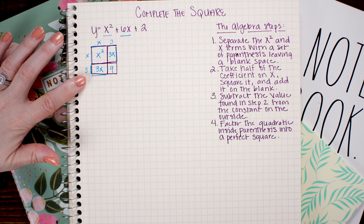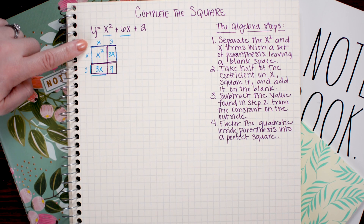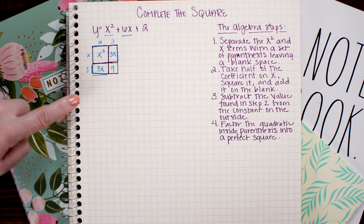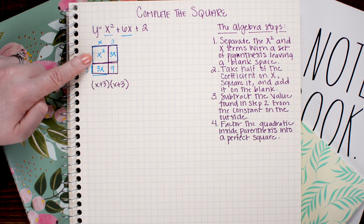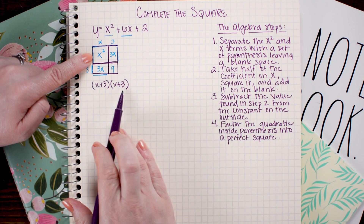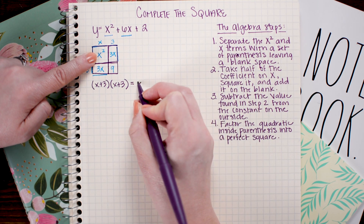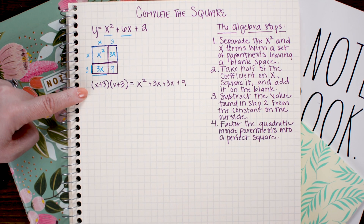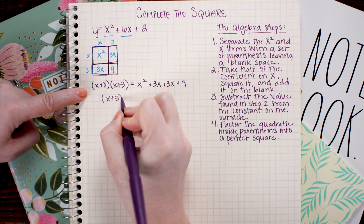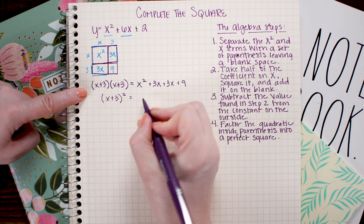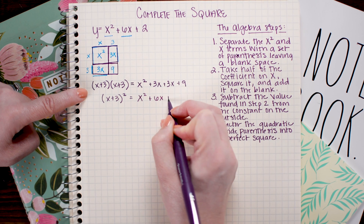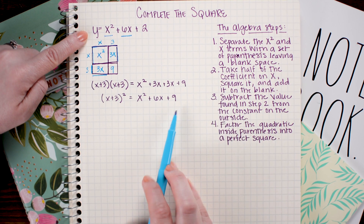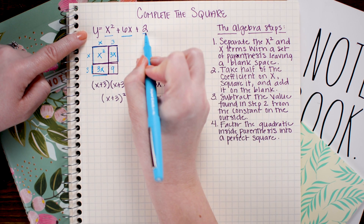I've made an area diagram representing a perfect square. The large square has side lengths of x plus 3 and x plus 3, equal to the sum of the smaller parts inside: x squared plus 3x plus 3x plus 9. I can rewrite x plus 3 times x plus 3 as x plus 3 squared, and combining like terms on the right gives x squared plus 6x plus 9. This is a perfect square — but it's not the same as our original equation, which has plus 2, not plus 9.